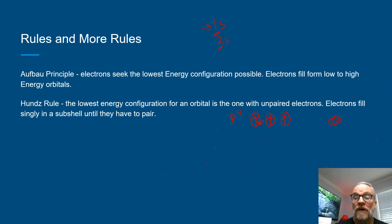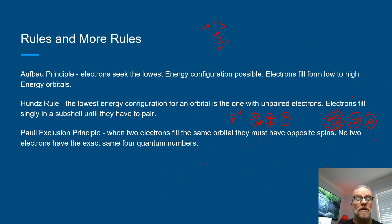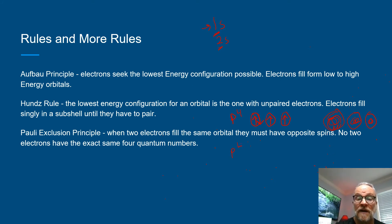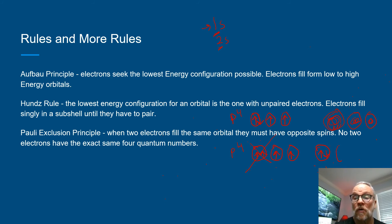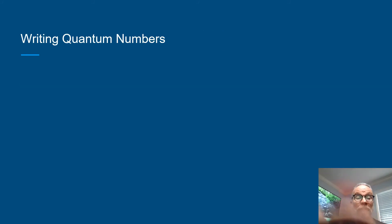The reason electrons fill singly is that a spinning electron in an empty orbital has more energy and repels other electrons until they have to pair up. The Pauli exclusion principle states that when two electrons fill the same orbital, they must have opposite spins. Going back to the p4 example, you cannot have two electrons spinning in the same direction — the second electron always has to have an opposite orientation. No two electrons have the exact same four quantum numbers.